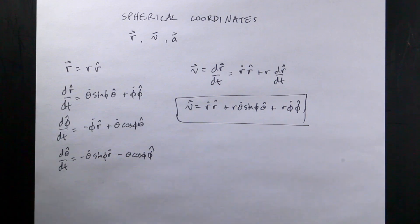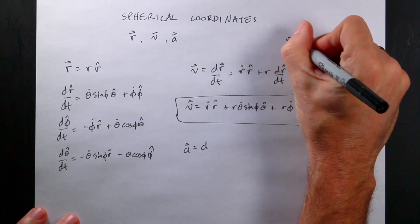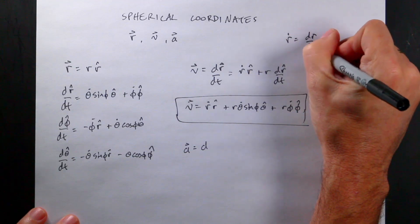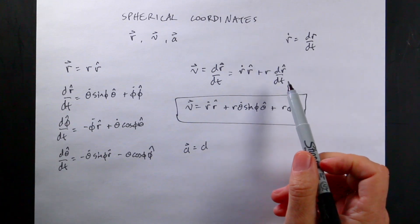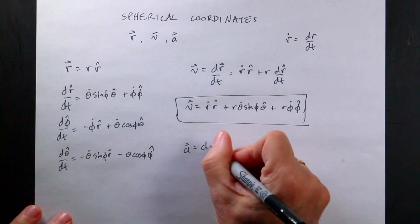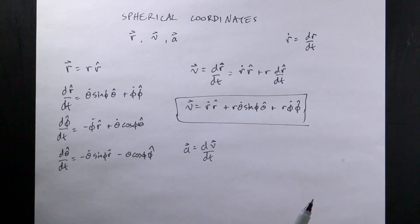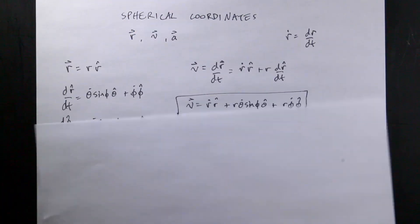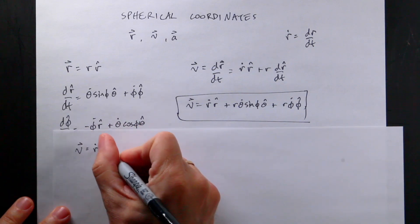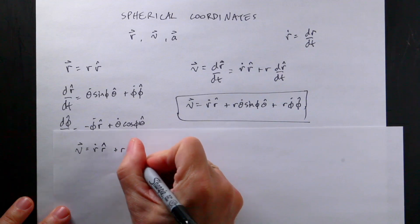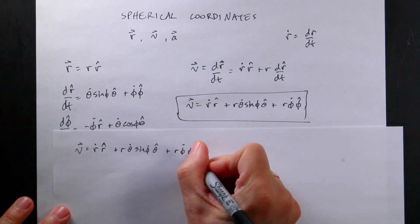Now what about the acceleration? Just to be clear, r-dot equals dr/dt. The dot notation — if you haven't seen it before — represents a time derivative as a dot above the variable, and a second derivative is two dots. So the acceleration is dv/dt, and I need to take the derivative of v with respect to time. Let me write v up here so I won't forget: v equals r-dot r-hat plus r theta-dot sine phi theta-hat plus r phi-dot phi-hat.